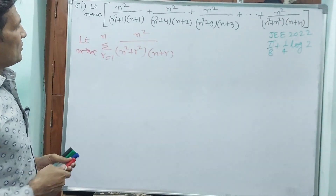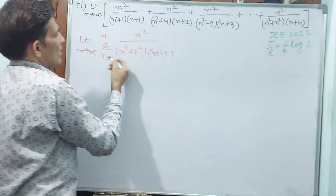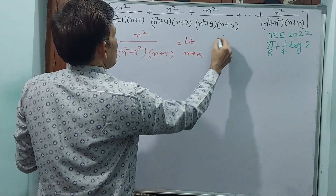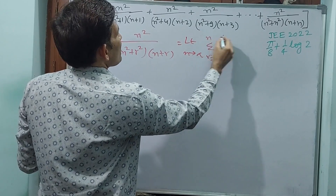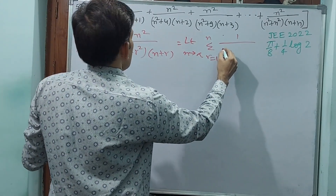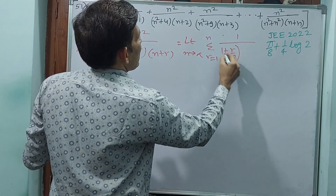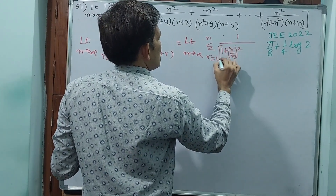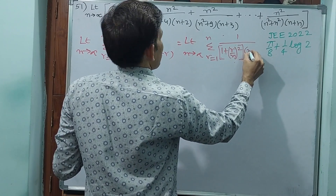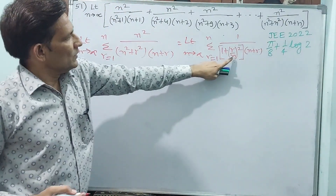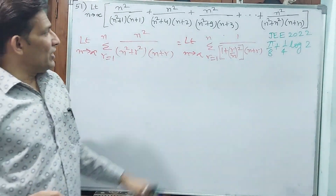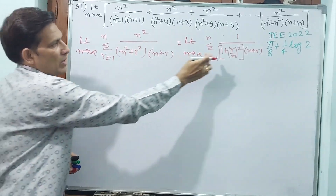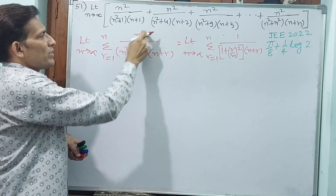Now how are we going to modify? I want to cancel n squared. Taking n squared common: limit n tends to infinity, sigma r equals 1 to n, 1 by (1 plus r by n) whole squared. I have taken n squared — if I take n squared, 1 plus r squared by n squared will come, and n squared gets cancelled out.